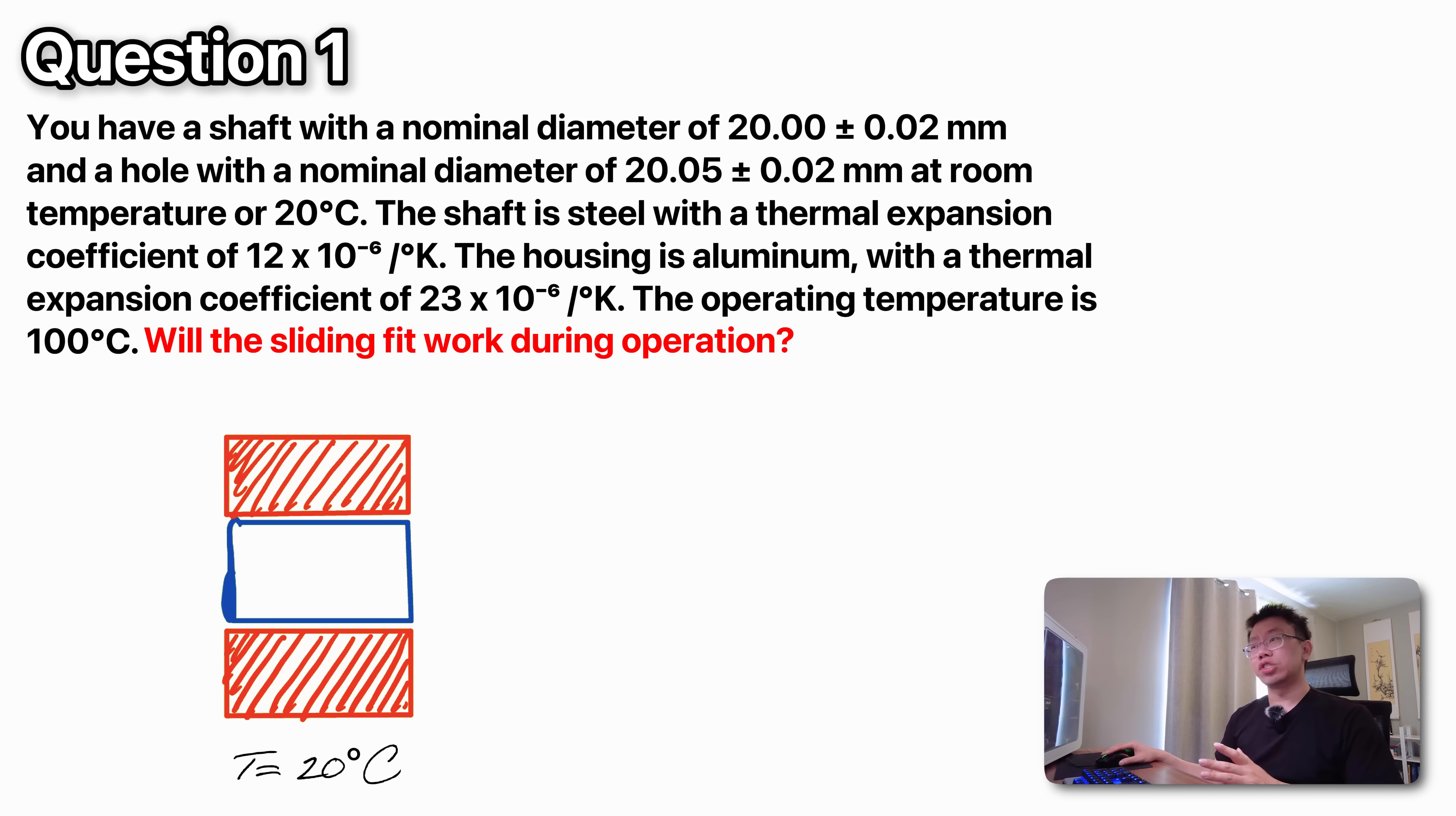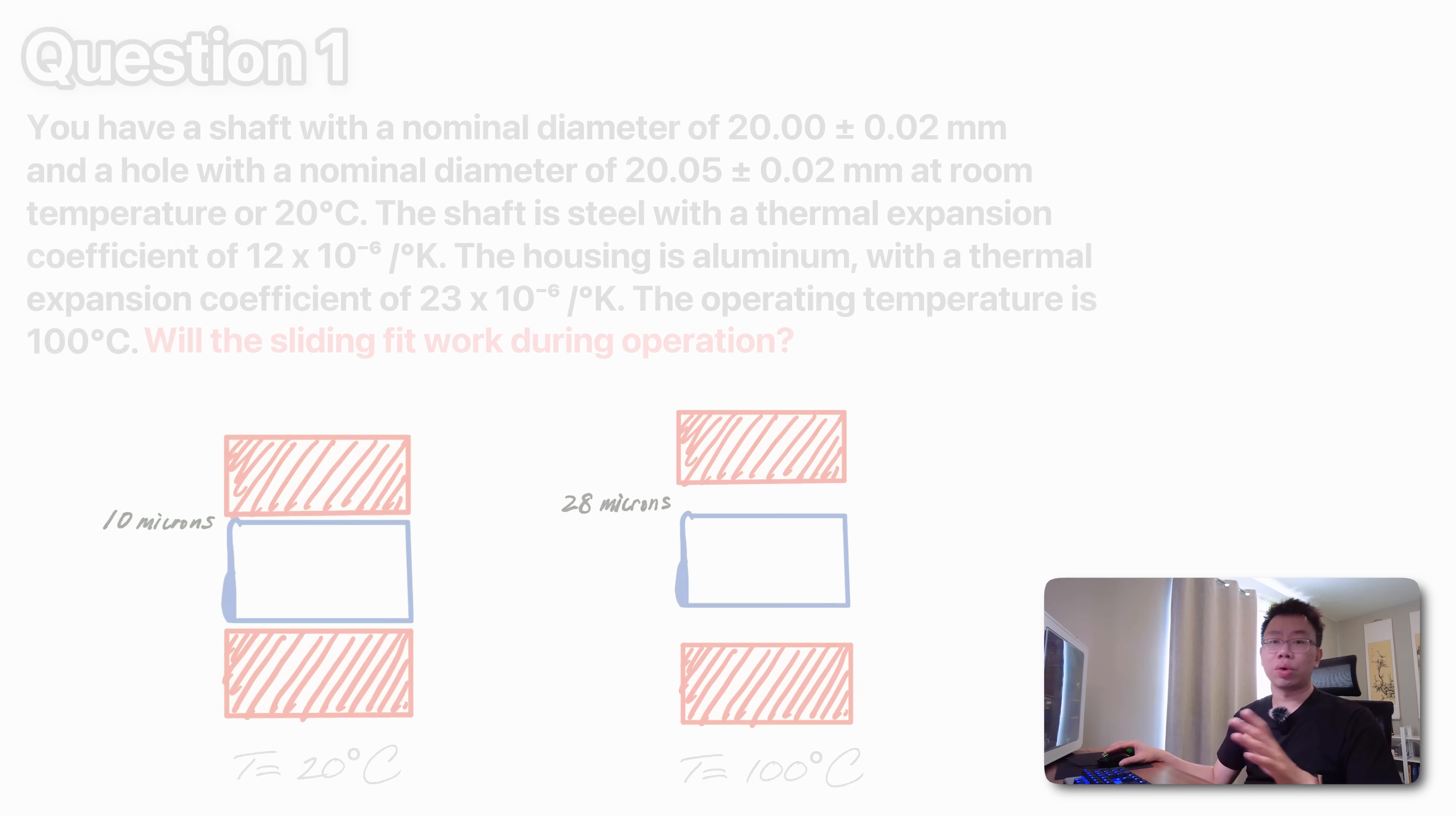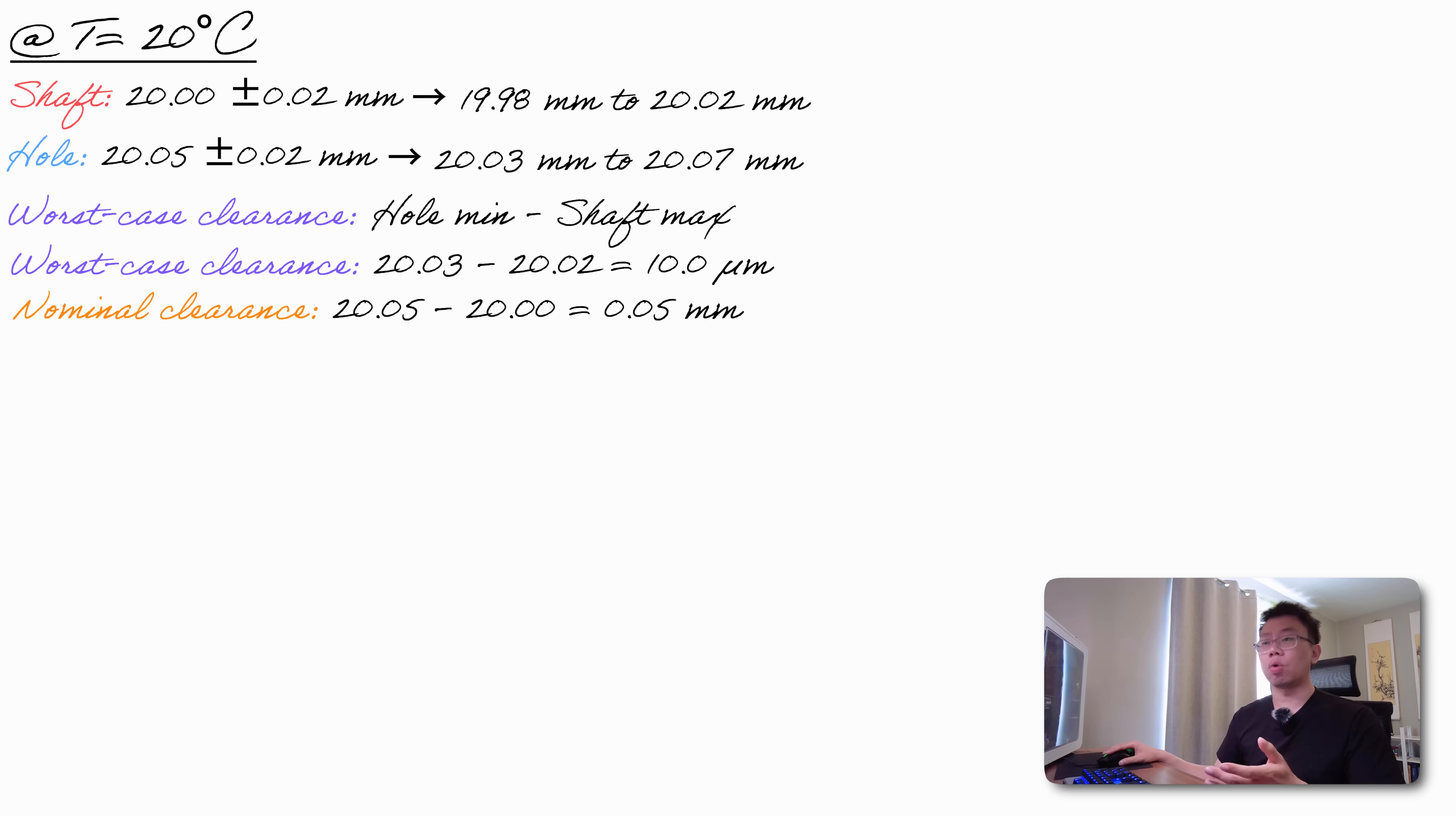So the short answer is yes. With the steel shaft and an aluminum housing, the fit actually becomes looser at operating temperature. The worst case clearance increases from 10 microns at room temperature to approximately 28 microns at 100 degrees Celsius. At 20 degrees Celsius, the shaft diameter range is 20 plus or minus two hundredths of a millimeter, giving us 19.98 to 20.02 millimeters. The hole diameter range is 20.05 plus minus two hundredths of a millimeter, giving 20.03 to 20.07 millimeters. The worst case clearance is the minimum hole minus the maximum shaft or 20.03 minus 20.02, which equals one hundredths of a millimeter or 10 microns. The nominal clearance is simply 20.05 minus 20, which equals five hundredths of a millimeter or 50 microns.